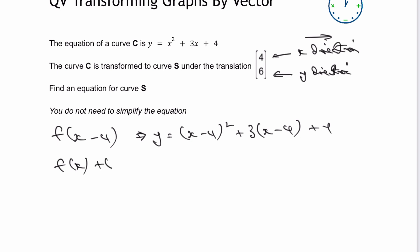But this time I'm going to add 6 to the end of it. So the answer to the question without any form of simplification is going to be x minus 4 squared plus 3 times x minus 4 and rather than plus 4 at the end I'm going to have plus 10.